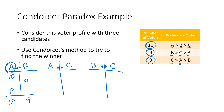For A versus C: A gets 10 votes from the first group. The eight voters in the third row all vote for C. The nine voters can't vote for B, their top choice, so they vote for their second choice, which is C. So C wins that matchup 17 to 10.